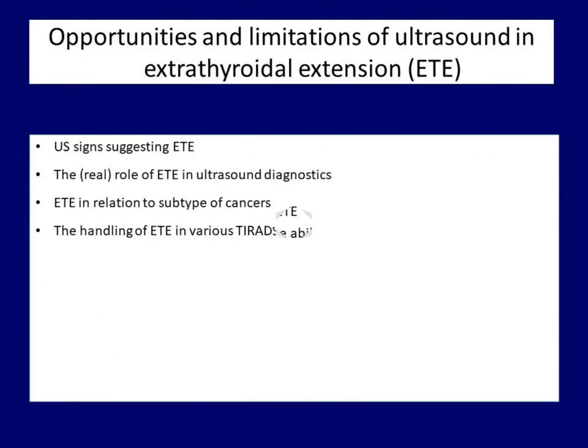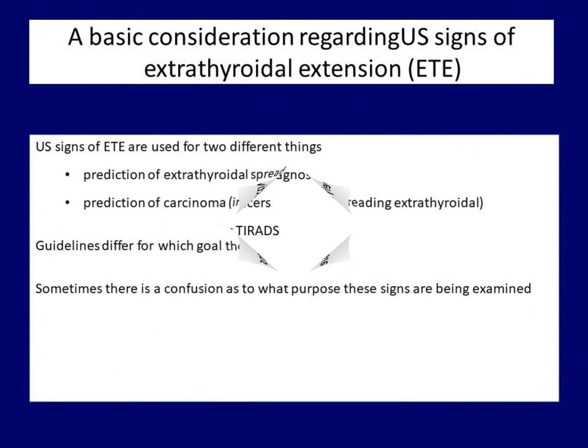We move on to the second part of the lecture. We discuss the real role of ultrasound in extrathyroidal spread, present the ultrasound signs which might suggest extension, and demonstrate the limitations and potential. We analyze the role of extrathyroidal spread in various scoring systems and in the different subtypes of thyroid cancers. First, a very important consideration: we must realize that ultrasound signs of extrathyroidal growth are used in two different senses.